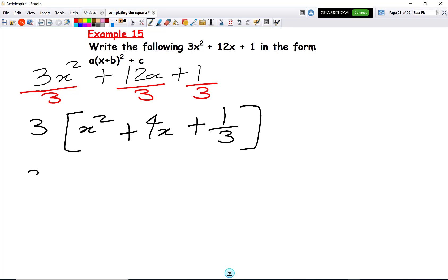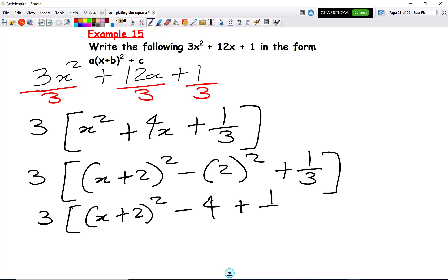Now I'm going to complete the square here. I'm going to get (x + 2)² - 2² + 1/3. And that's going to give me 3[(x + 2)² - 4 + 1/3]. Now don't forget,